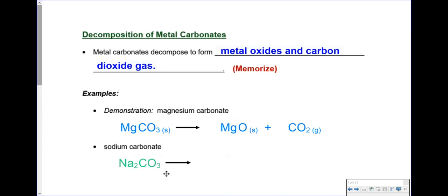Let's see what happens with sodium carbonate. Sodium is a metal, carbonate is the polyatomic ion. It's going to make a metal oxide — sodium oxide, Na2O, since sodium is +1 and oxygen is -2 — plus carbon dioxide gas. Check those charges. And that one's balanced too. Decomposition of metal carbonates is easy.